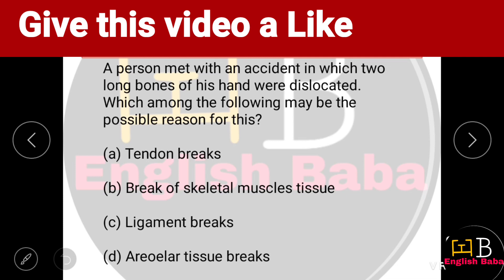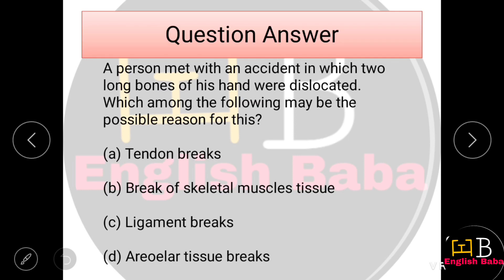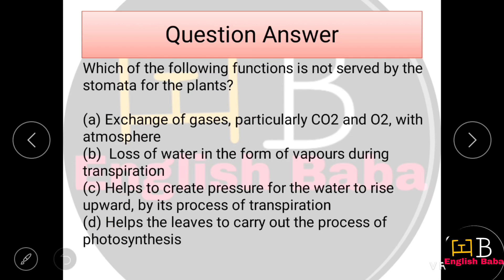A person met with an accident in which two long bones of his hand were dislocated. Which of the following may be the possible reason? Option A: a tendon breaks. Option B: break of skeletal muscle tissues. Option C: ligament breaks. Option D: areolar tissue breaks. The correct option is C — ligament breaks.